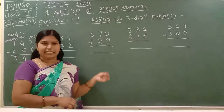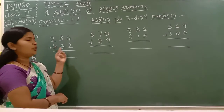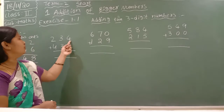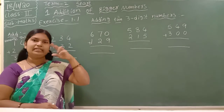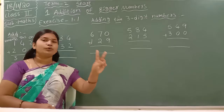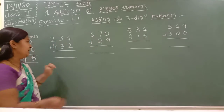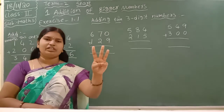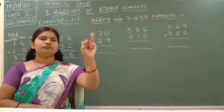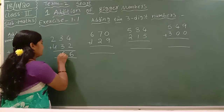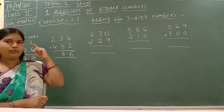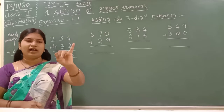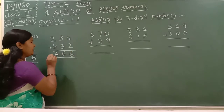Now go to the next question: 234 plus 432. First which place do we add? The 1s place. 4 plus 2 — 4 in the mind, take 2 fingers: 4, then 5, 6. Write 6 in the 1s place. Next: 3 plus 3 — 3 in the mind, take 3 fingers: 3, then 4, 5, 6. Next: 2 plus 4 — 2 in the mind, take 4 fingers: 2, then 3, 4, 5, 6. The answer is 666.